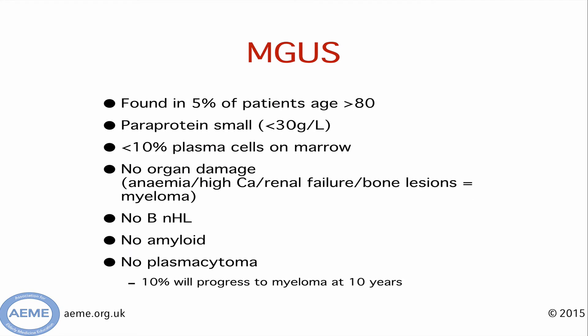MGUS is relatively common in the elderly population, with up to 5% of 80-year-olds having a small paraprotein found. The paraproteins here are generally small — less than 30 grams per litre, and most commonly less than 10 grams per litre. If a bone marrow biopsy is performed, there will be less than 10% plasma cells in the marrow. There is no end-organ damage such as anaemia, high calcium, renal failure, or bone lesions — if any of these were present, the diagnosis would be myeloma. In addition, there are no signs of non-Hodgkin lymphoma, amyloid, or plasmacytoma. The prognosis is generally very good, with only 10% of MGUS cases progressing to myeloma at 10 years.